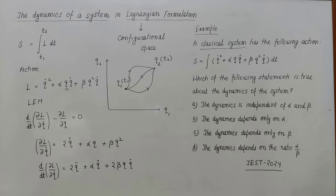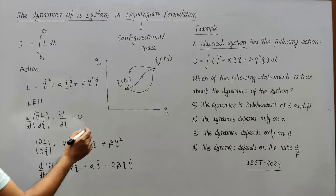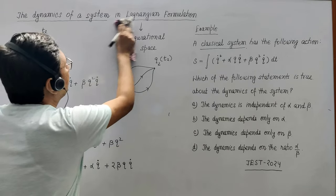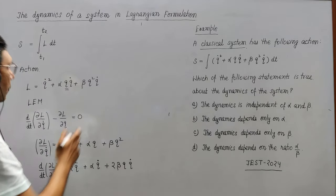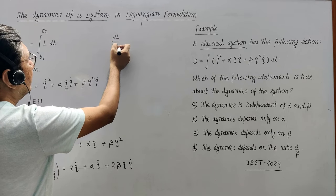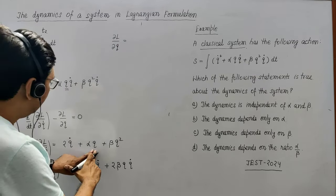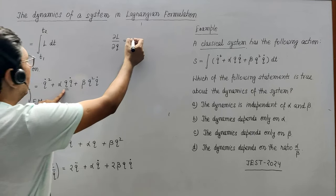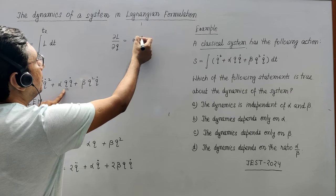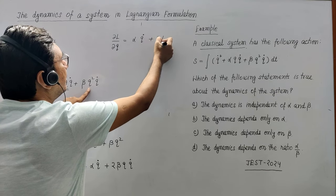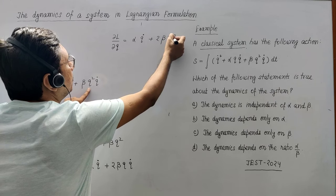Now find out the second term, ∂L/∂q. Looking at each term of the Lagrangian, q appears here: this gives αq̇, and from the βq²q̇² term this gives 2βqq̇. So ∂L/∂q = αq̇ + 2βqq̇.